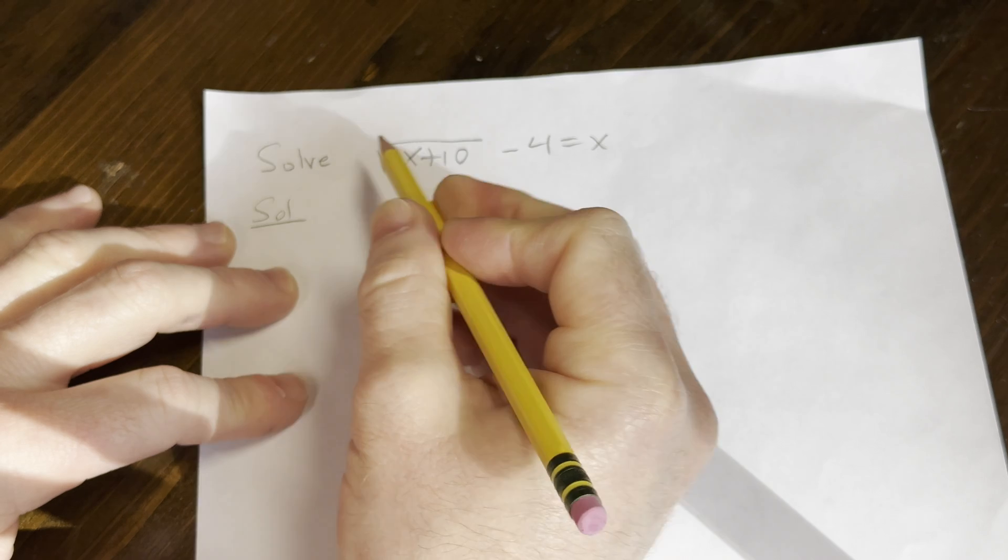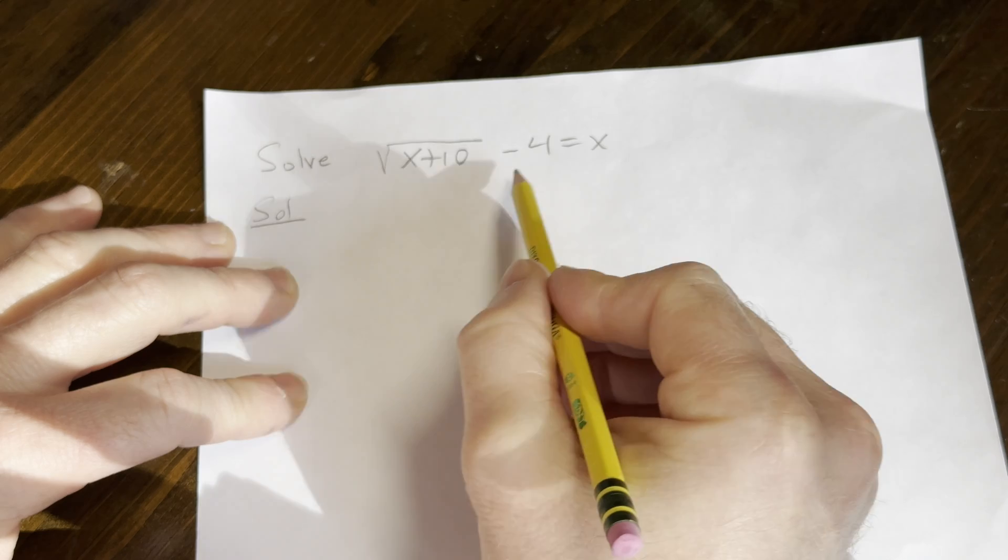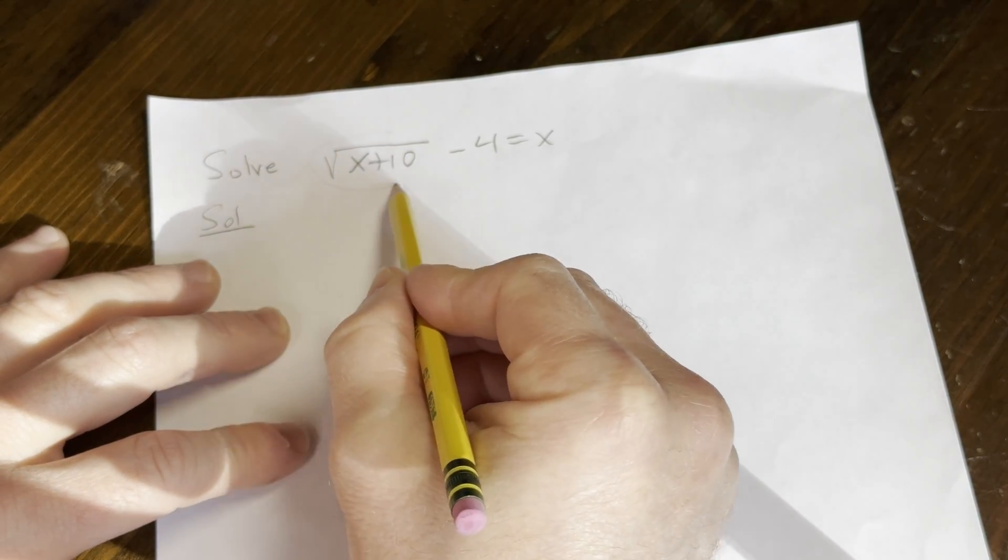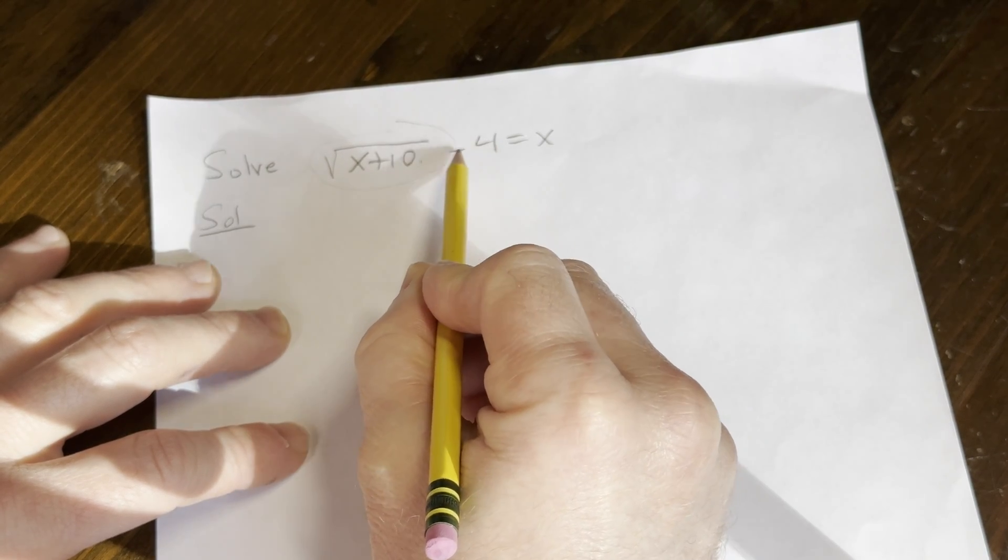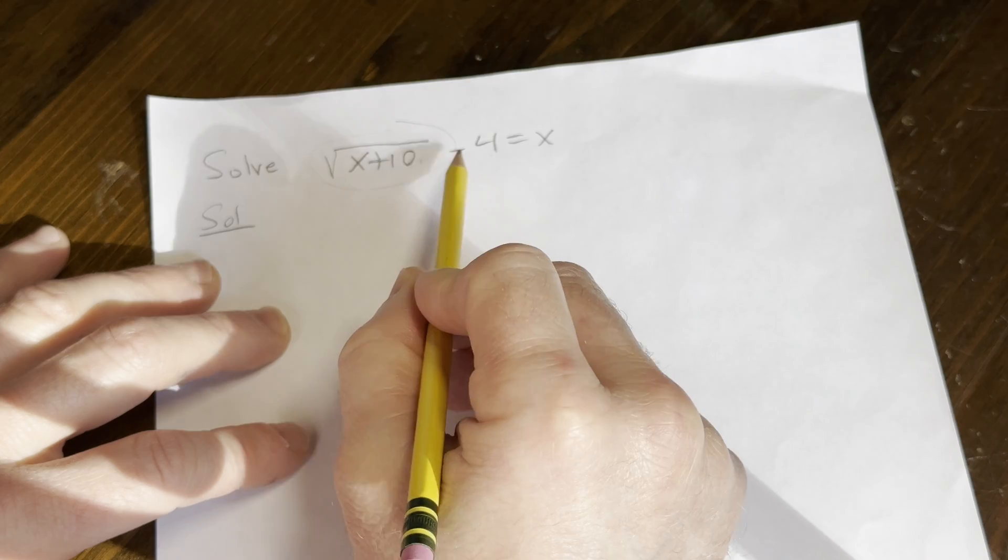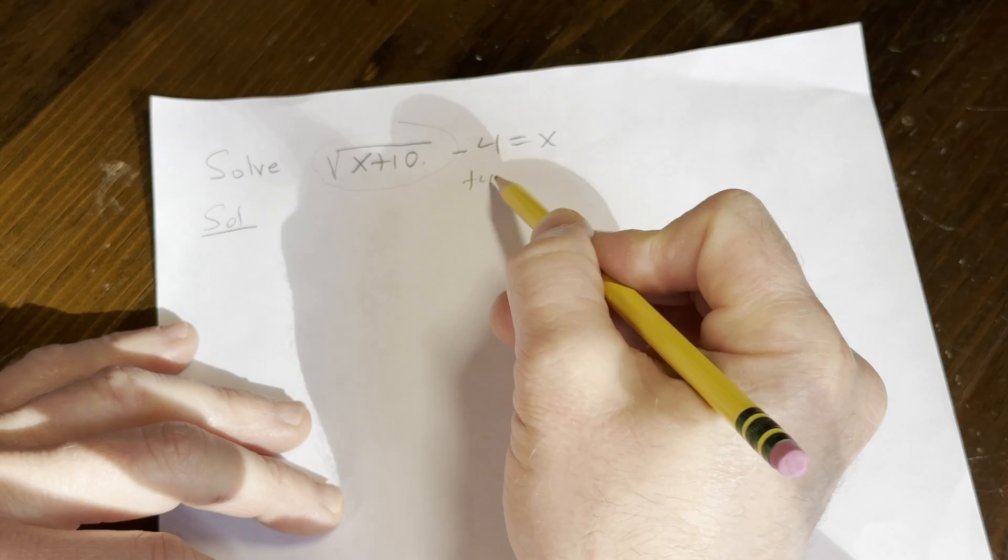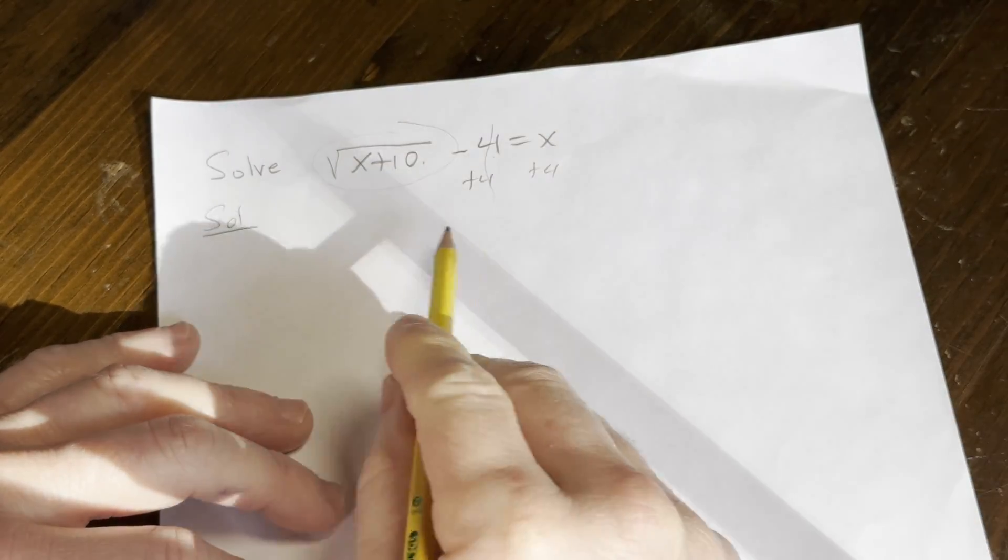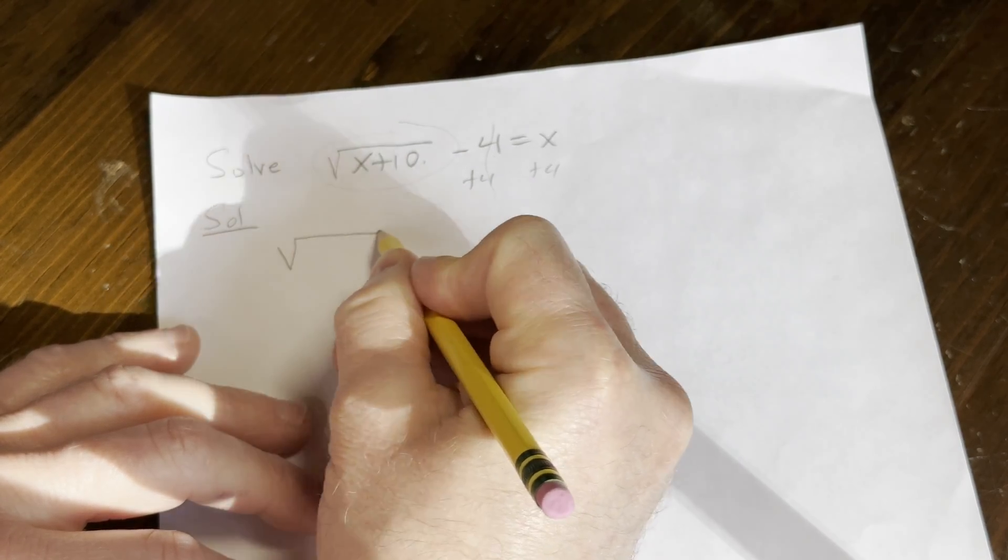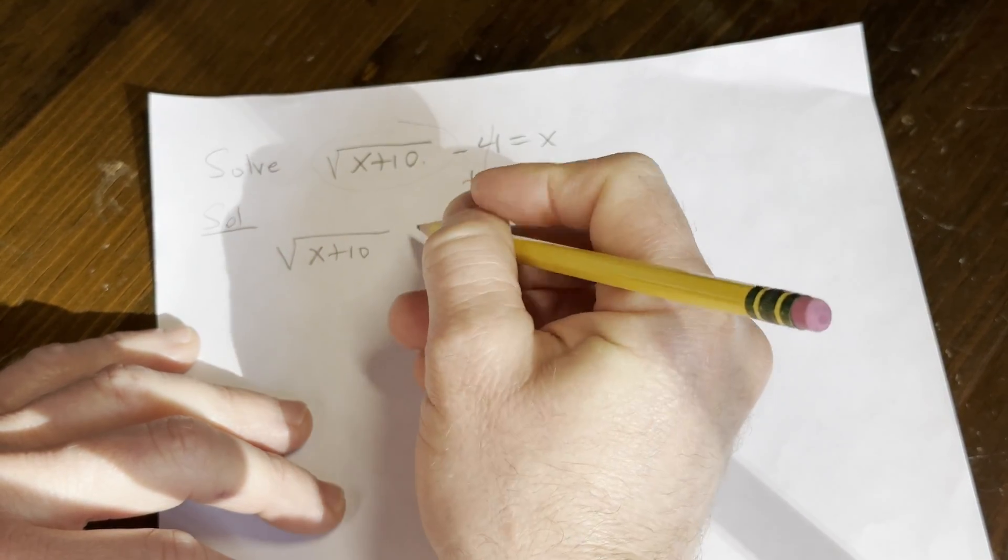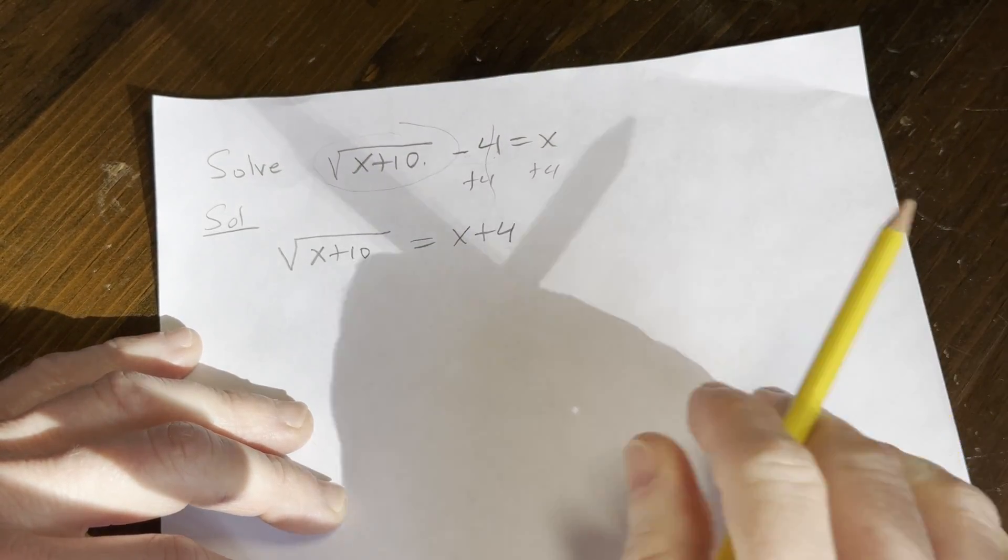So solution. Whenever you have an equation with a square root like this, what you want to do is isolate the term that has the square root. So we want to isolate this right here. We have √(x+10) - 4. Because the 4 is being subtracted, in order to get rid of it, we add 4 to both sides. We end up with √(x+10) on the left-hand side, and on the right we have 0, so it's √(x+10) = x + 4.